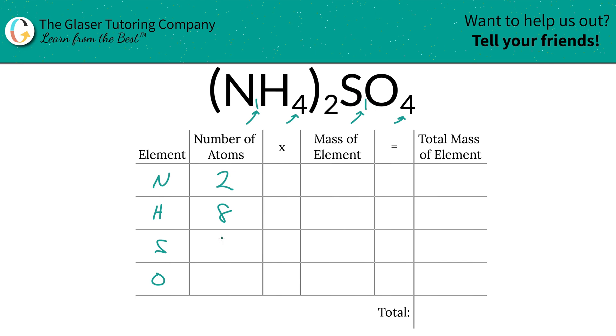You have only one sulfur because there is no outer subscript to multiply it by, and you have four oxygen.